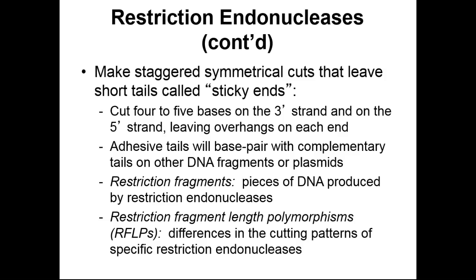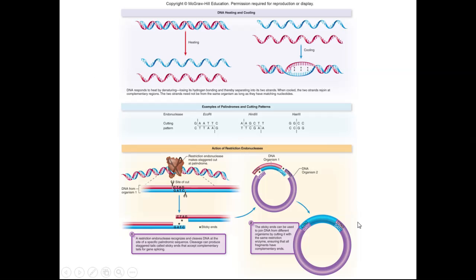The differences between our restriction fragments can be referred to as an RFLP, or restriction fragment length polymorphism. These polymorphisms can occur based on the differences between our restriction endonucleases. EcoRI and HindIII are probably the two most popular ones — they're the ones I spent the most time working with — but there's a wide variety of these restriction endonucleases.